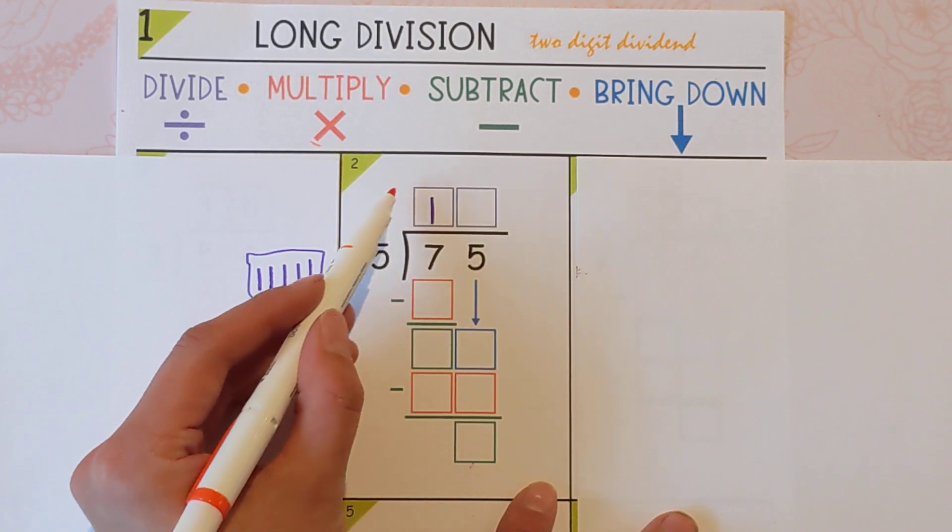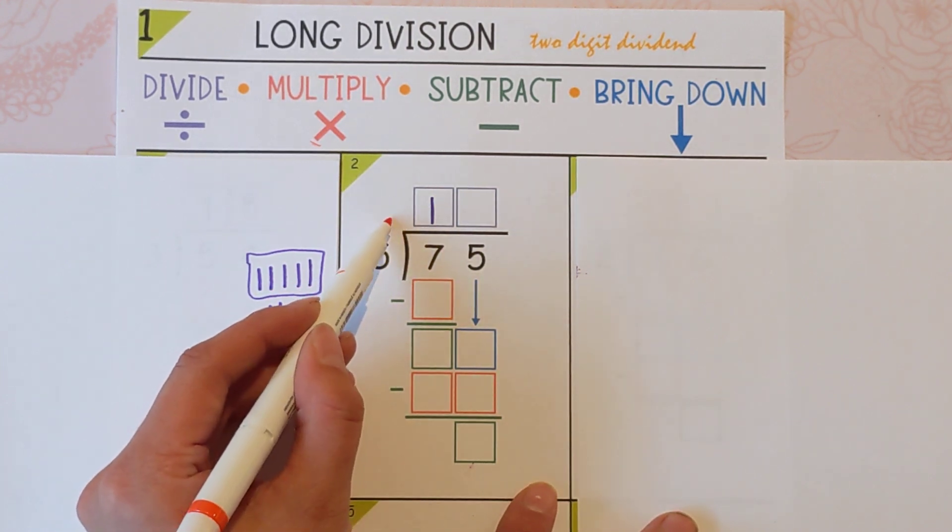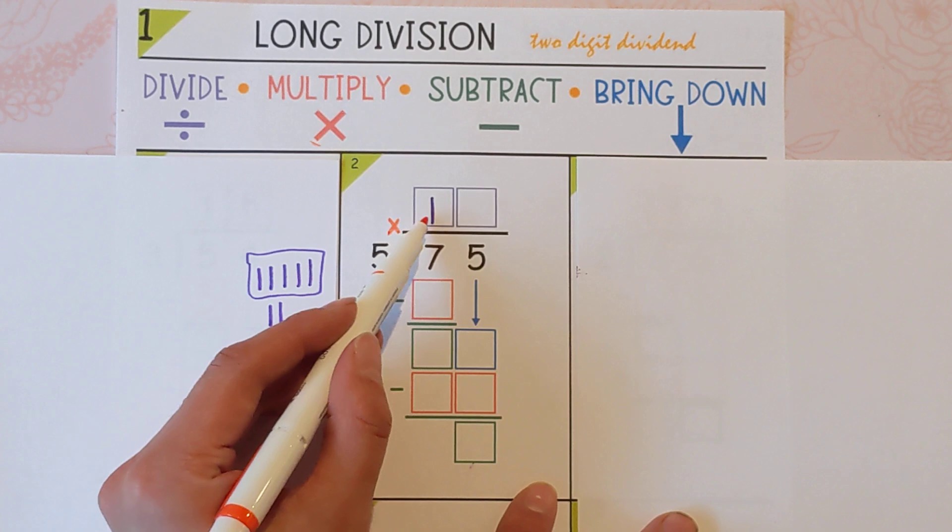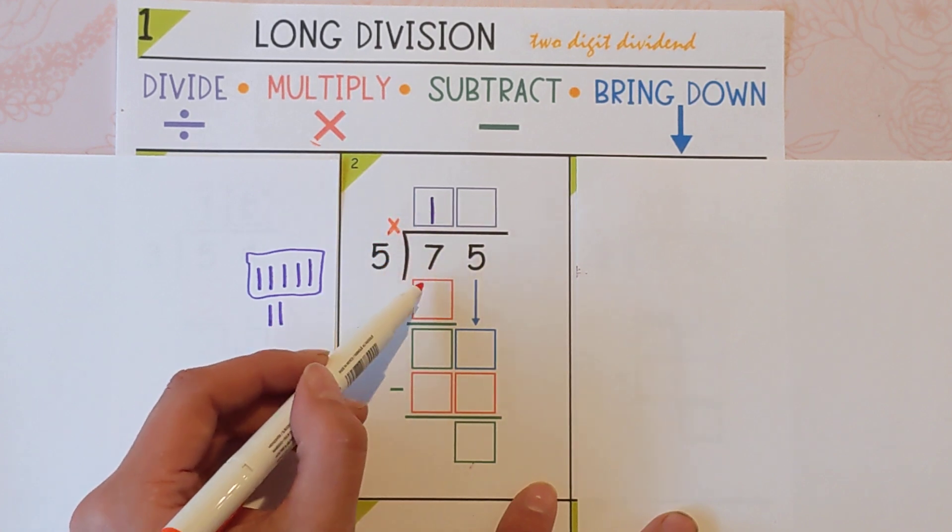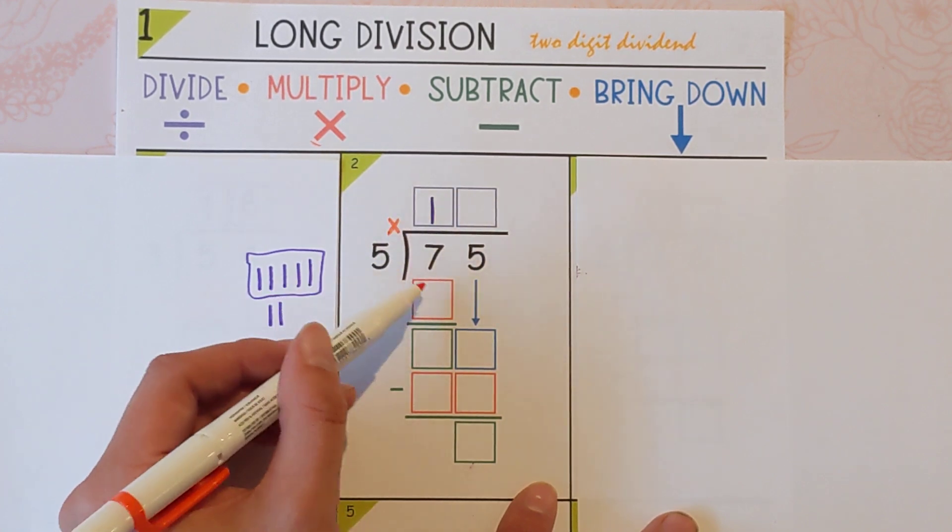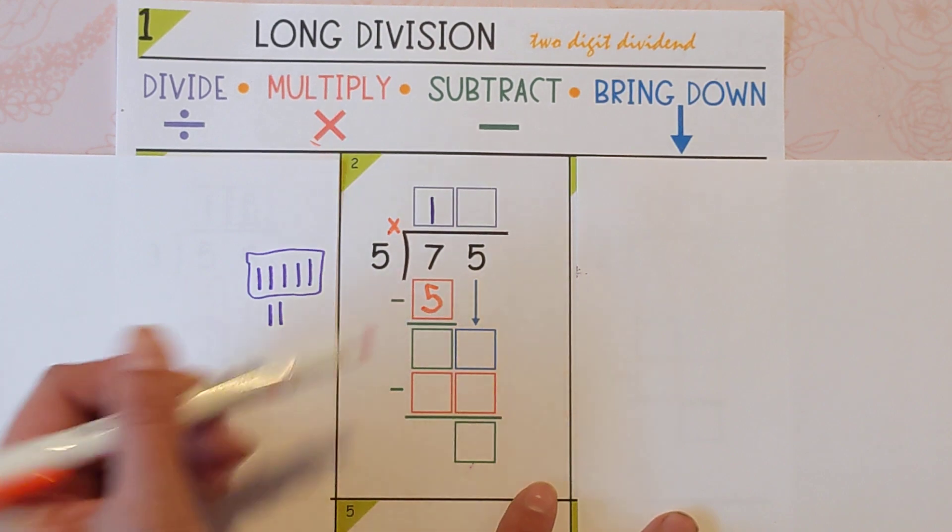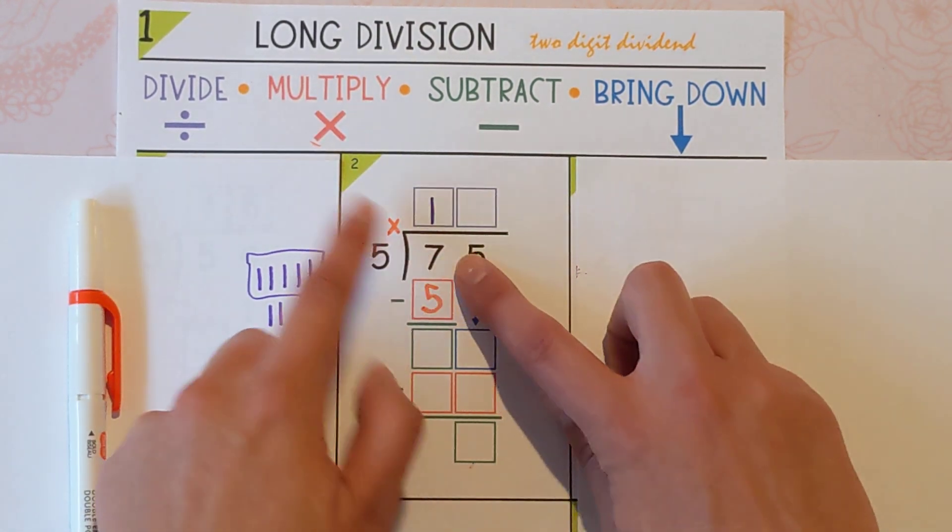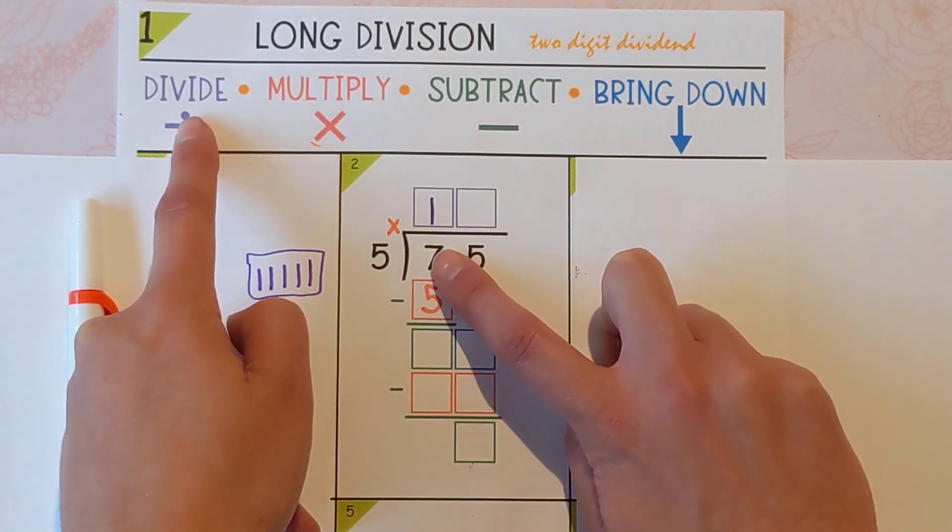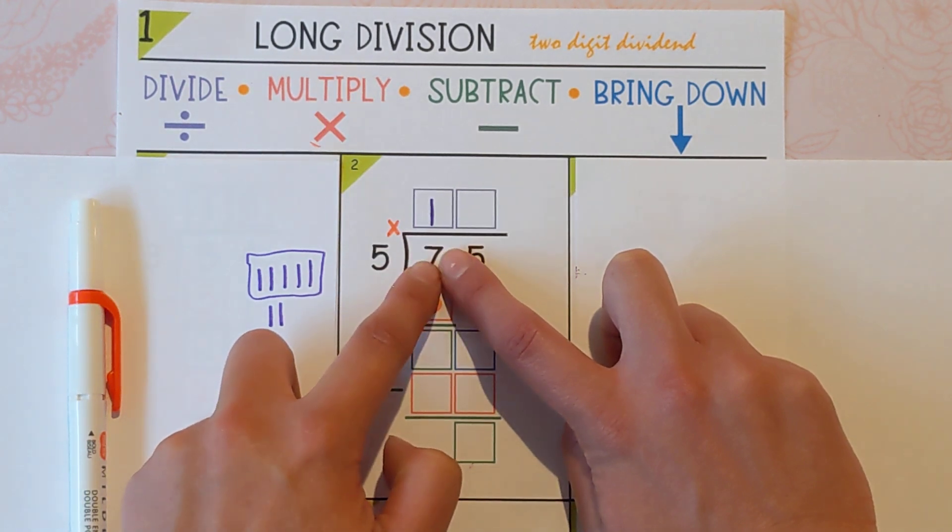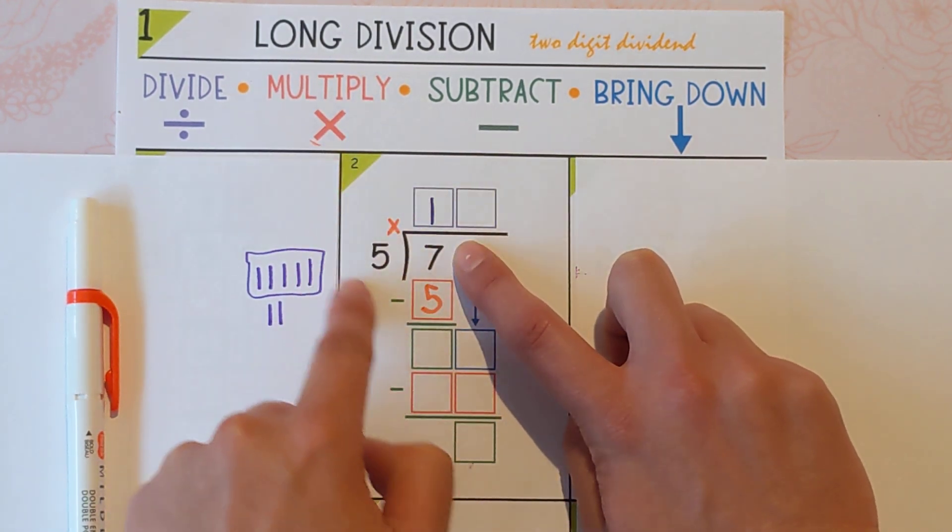And then I'm going to multiply it back against the 5. So sometimes I like to put a little X there. 1 times 5, coming back down here. 1 times 5 is 5. So just to recap what we did there: we divided, we said how many 5s go into 7? One time. And then we multiplied it back down.